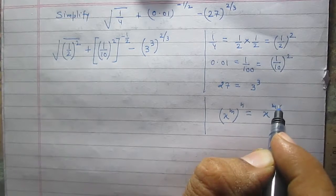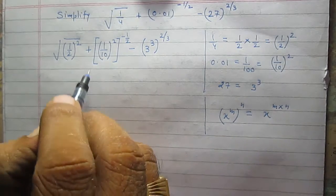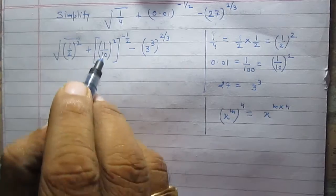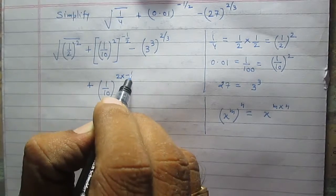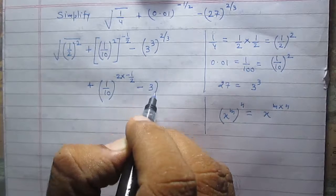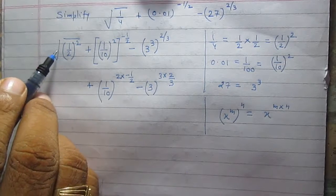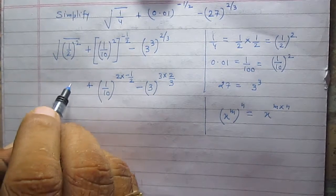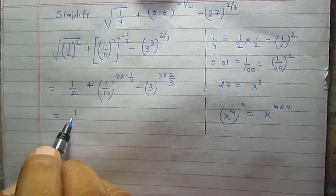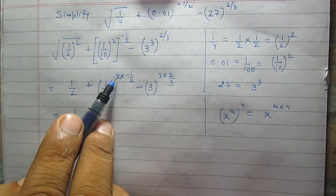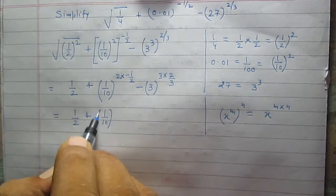Using this rule, we simplify: 1 by 10 raised to the power 2 multiplied by minus 1 by 2 gives 1 by 10 raised to the power minus 1, and 3 raised to the power 3 multiplied by 2 by 3. The first term, square root of a square of a number, is the number itself, so it simplifies to 1 by 2. The multiplication of 2 and minus 1 by 2 gives minus 1, so the second term is 1 upon 10 raised to the power minus 1.